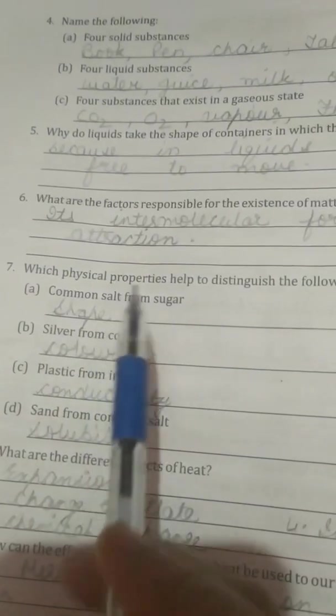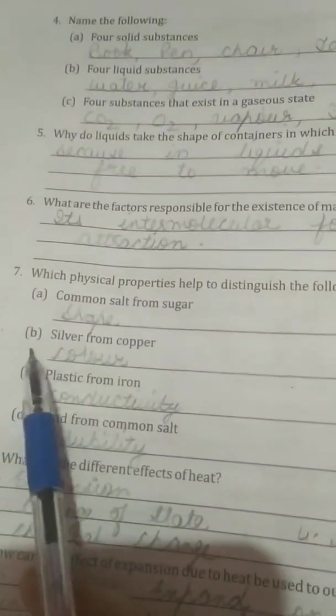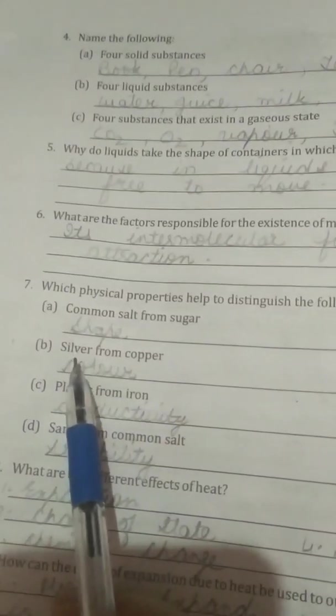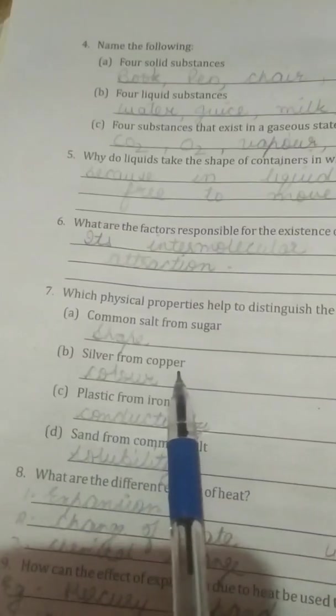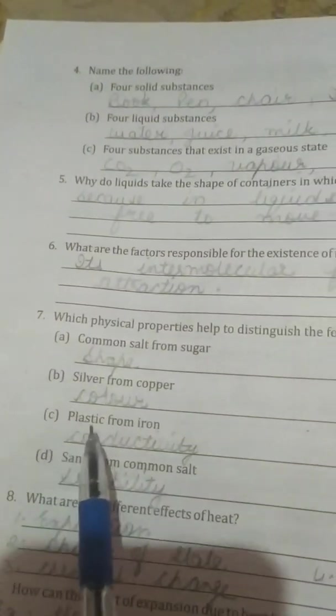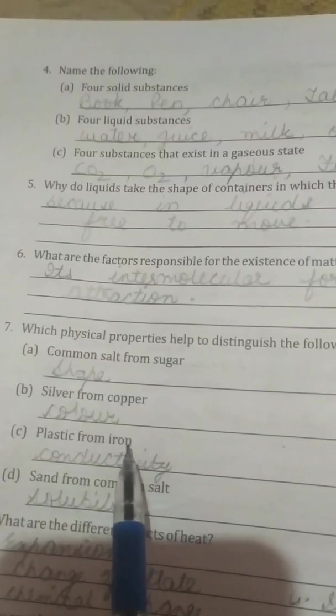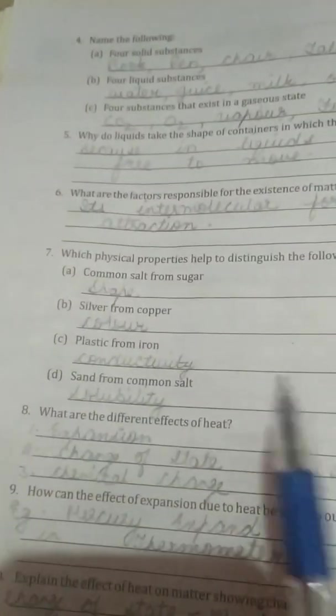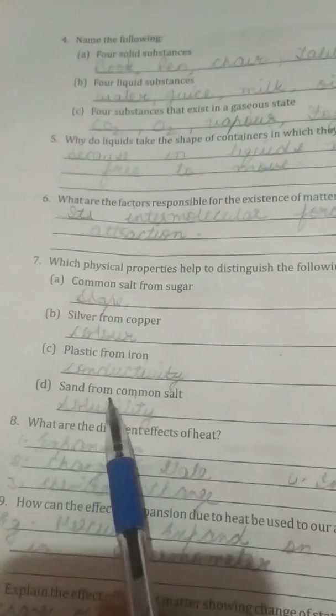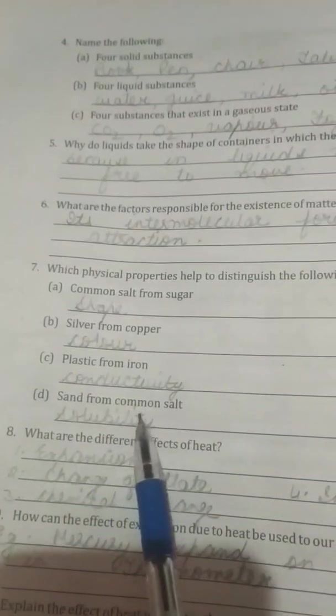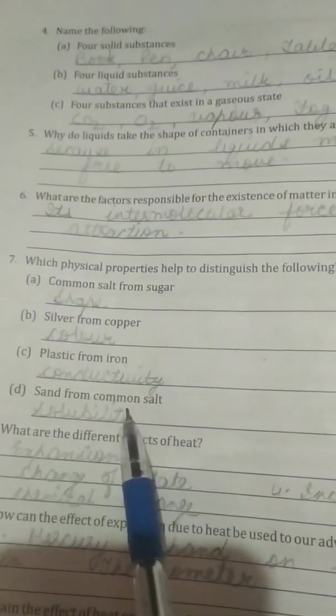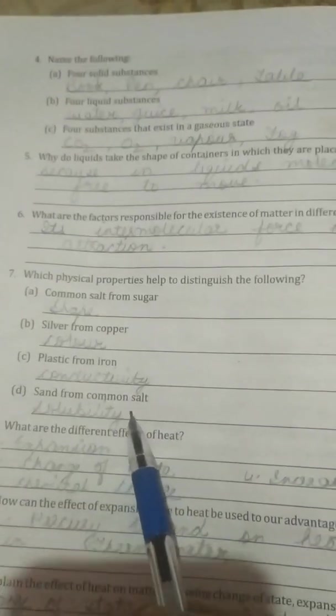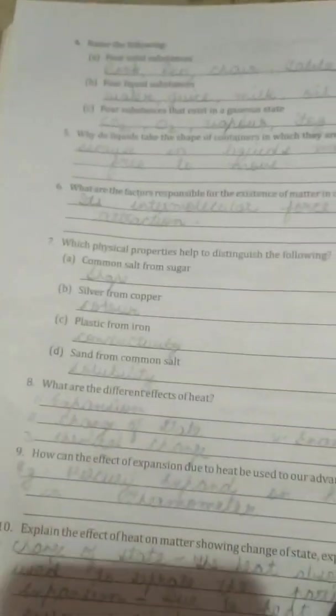Next, which physical properties help to distinguish the following? Common salt from sugar by the shape of them we can differentiate between them. Then B part, silver from copper, color, because silver is a little bit white in color but copper is little bit orangish color. C part, plastic from iron, conductivity, because iron is good conductor of electricity but plastic is a bad conductor of electricity. D part, sand from common salt, so solubility. We will dissolve them in water. Common salt can dissolve easily as compared to the sand. Sand will not dissolve.